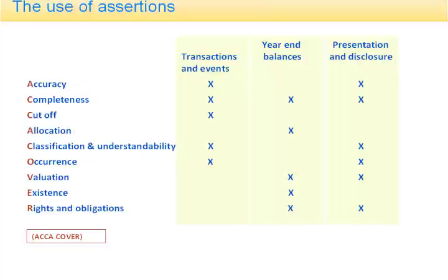These are the assertions, and the complete list is: accuracy, completeness, cutoff, allocation, classification, and understandability, occurrence, valuation, existence, rights, and obligations. There are a number of mnemonics through which this can be remembered — ACCA cover is a commonly used one. These divide into three families of assertions: those which relate to transactions and events (primarily items on the income statement), assertions relating to year-end balances (primarily what appears on the balance sheet), and those which primarily relate to presentation and disclosure. Whenever the auditor is carrying out the audit, evidence must be found to support each of the relevant assertions.